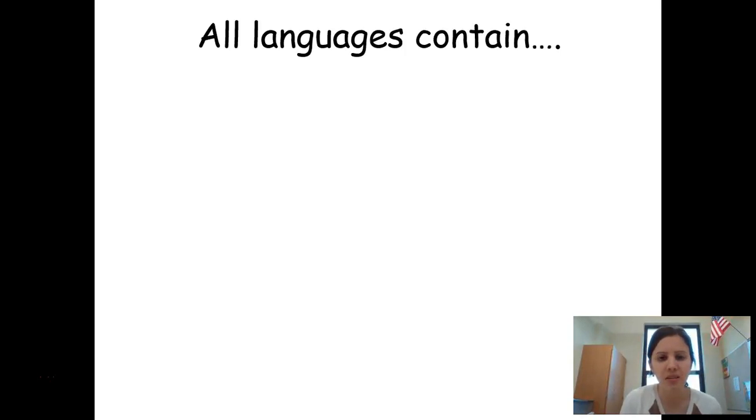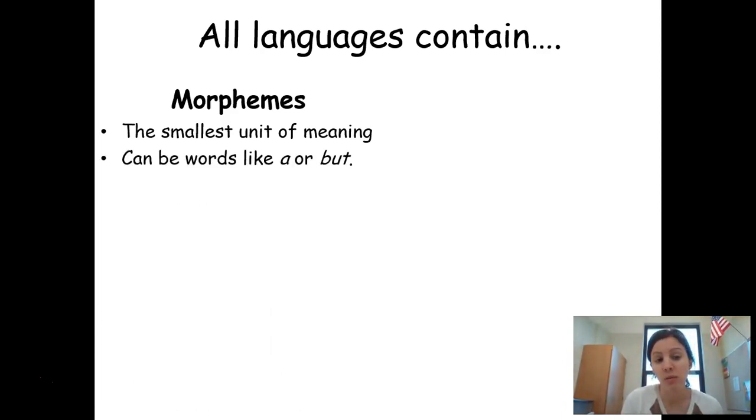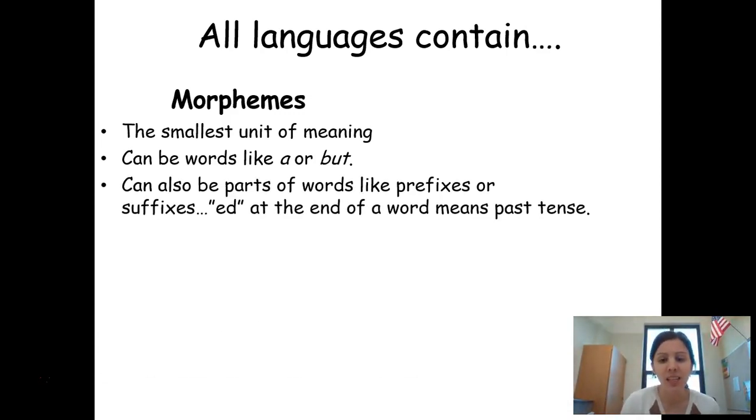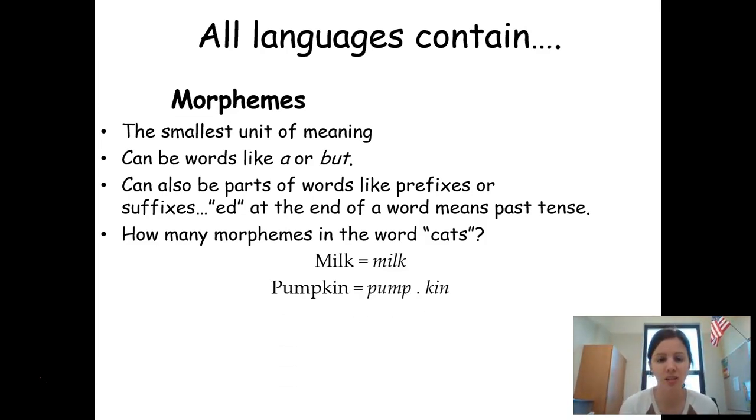The other thing that languages all contain is these things called morphemes. So morphemes are the smallest unit of meaning in a word. So phonemes are the smallest unit of sound. Morphemes are the smallest unit of meaning. So that's how I remember: morphemes begin with M and so does meaning. So these can be words like A or but. They can also be prefixes or suffixes. So if you take the word cats, it actually has two morphemes. You have the word cat and then you have the S after it that makes it plural, because we know that if you add an S to something, it usually makes it plural. So that would be a separate morpheme. Milk has just one morpheme because milk is just one word. But if you take pumpkin, that actually has two morphemes in it because you have pump and then you have kin. And then you have unforgettable, which has four different morphemes in it.